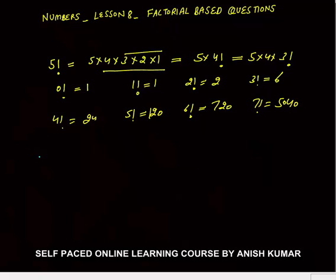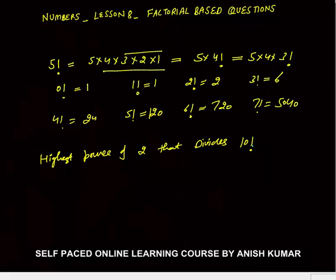The first and key concept here is: highest power of 2 that divides 10 factorial. The generalized concept is: highest power of a prime number p in n factorial.